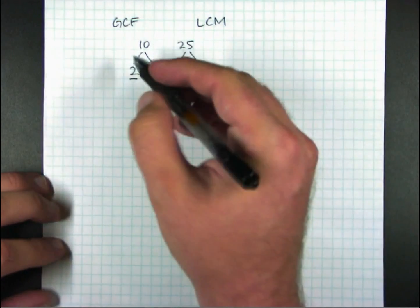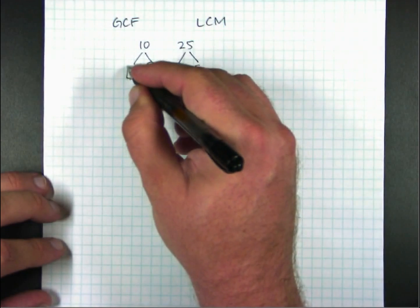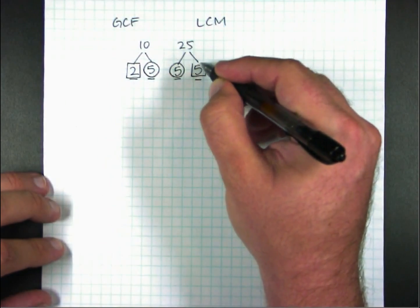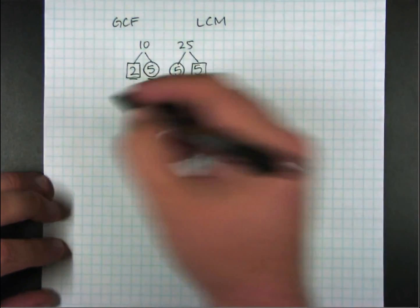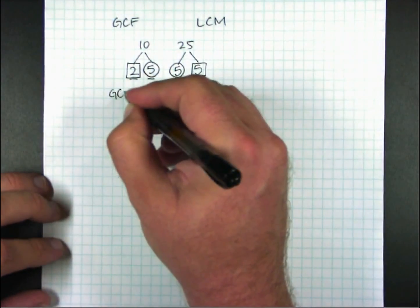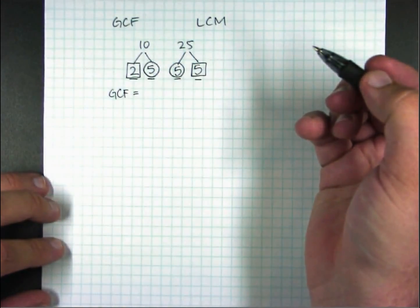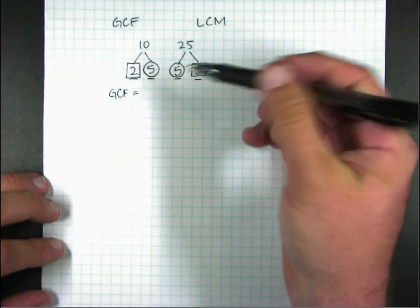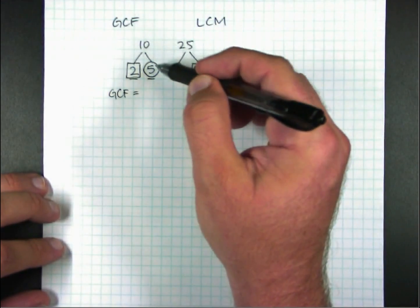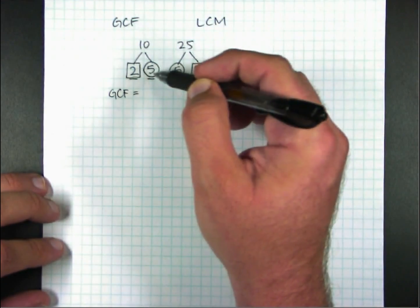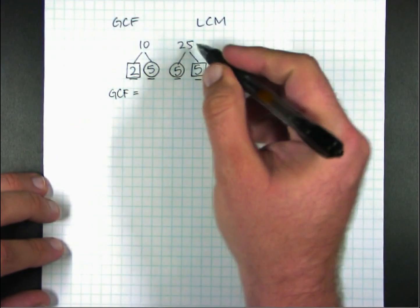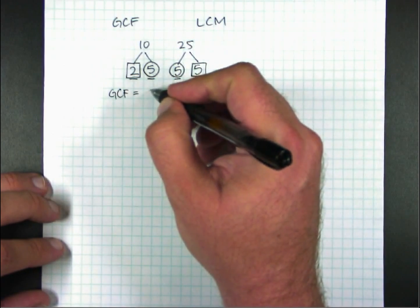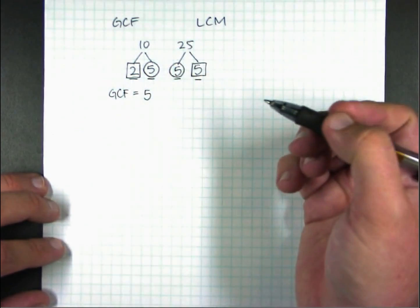Now, the 2 is not shared, so I'm going to put a box around it for now. The greatest common factor is all the stuff that's circled from a single number. So if I look at 10, what is circled is 5. If I look at 25, what's circled is 5. They each have a 5 circled and nothing else. So the greatest common factor is 5.